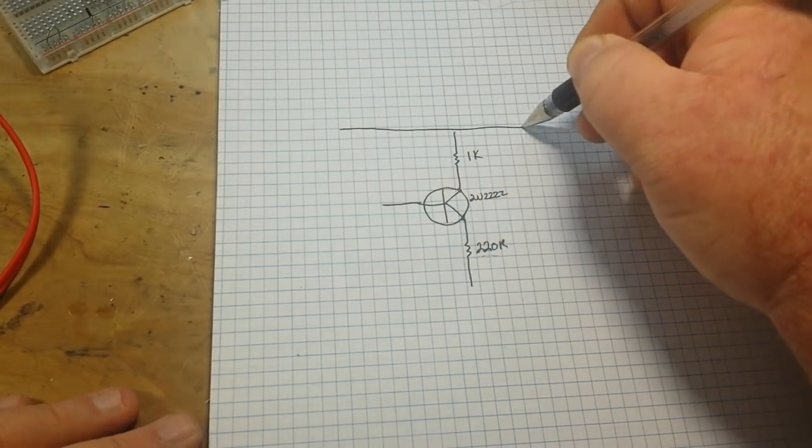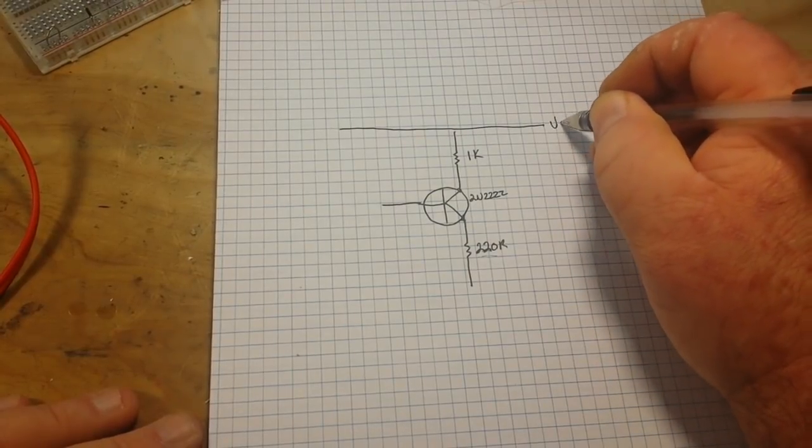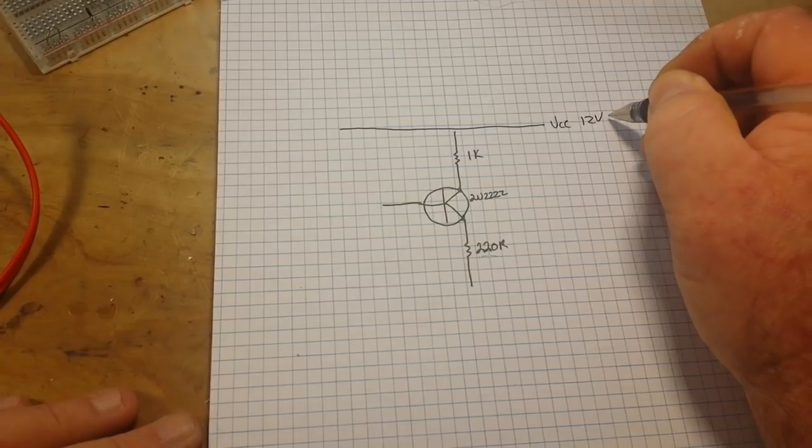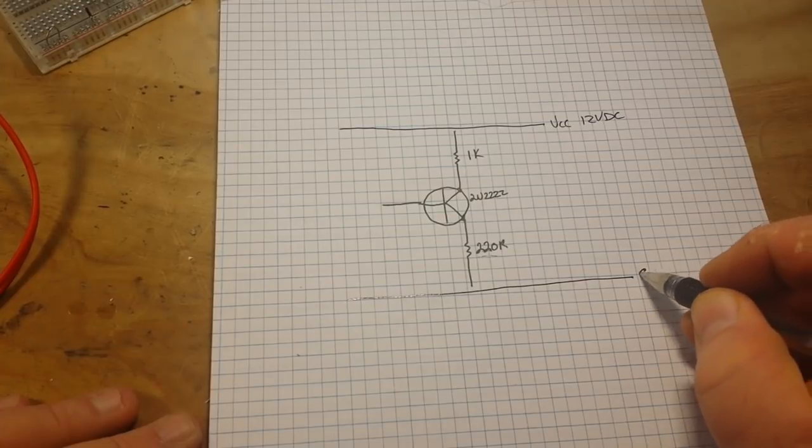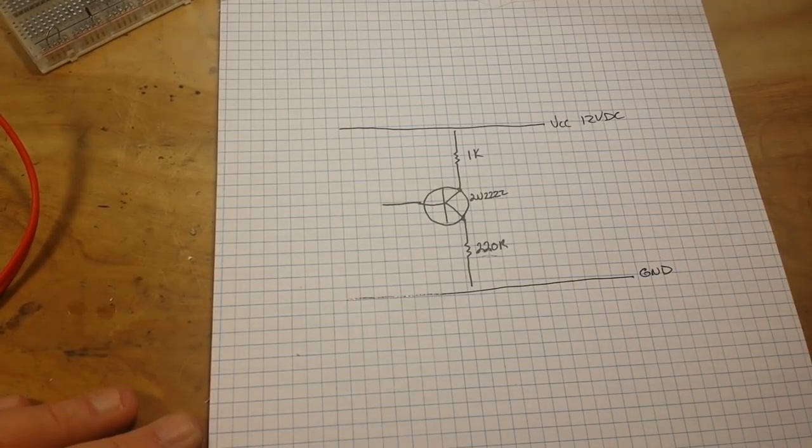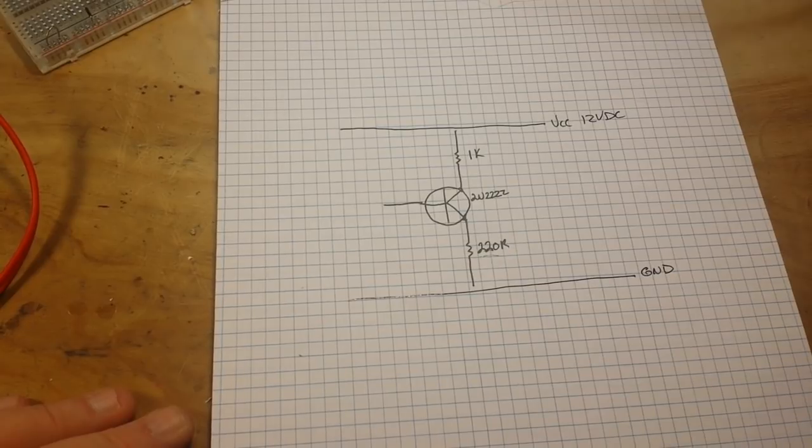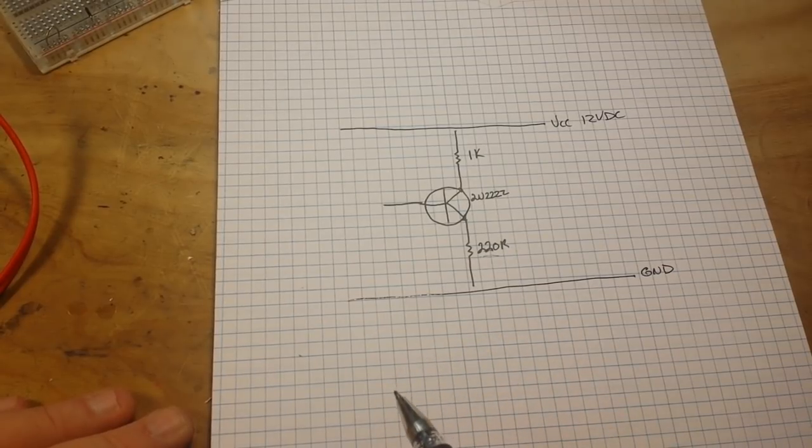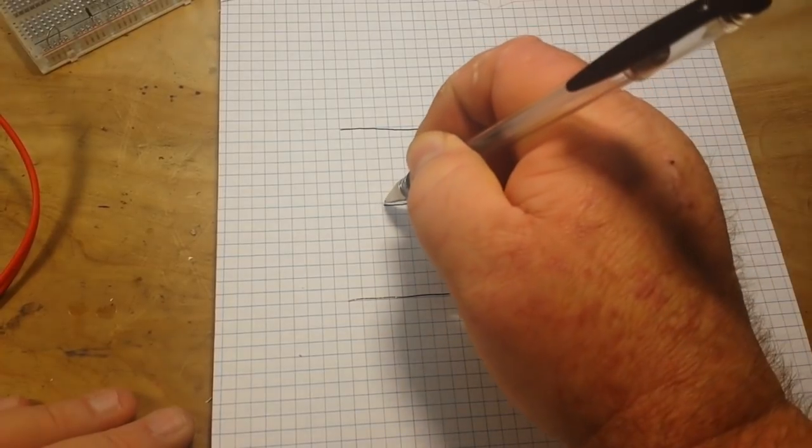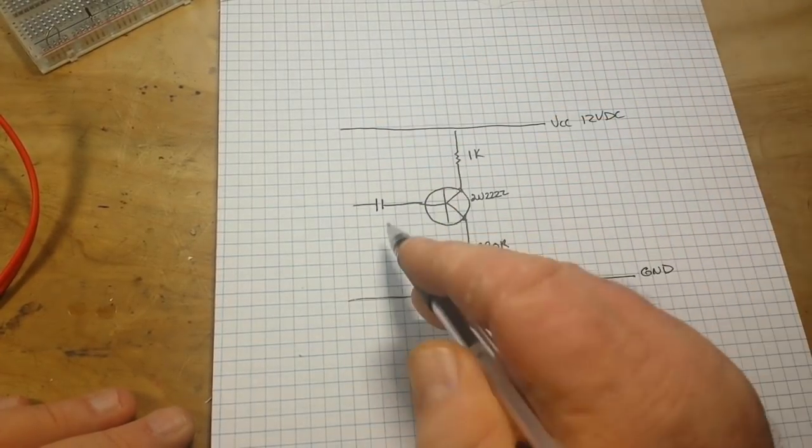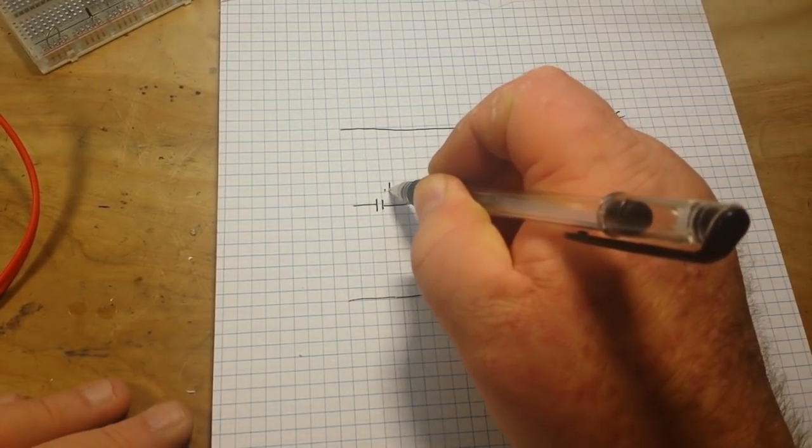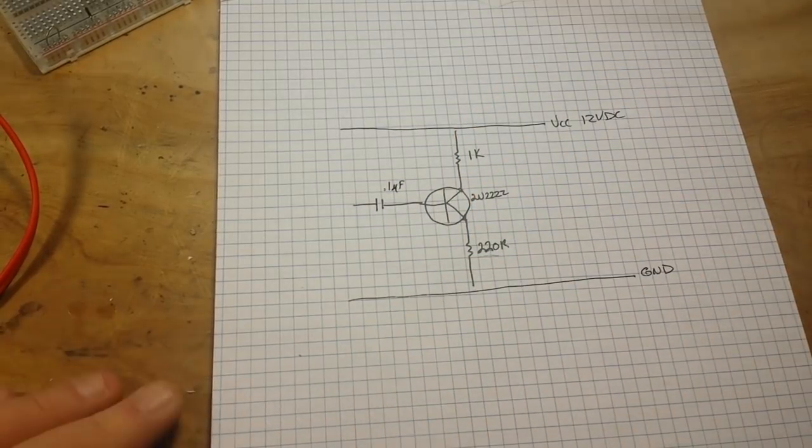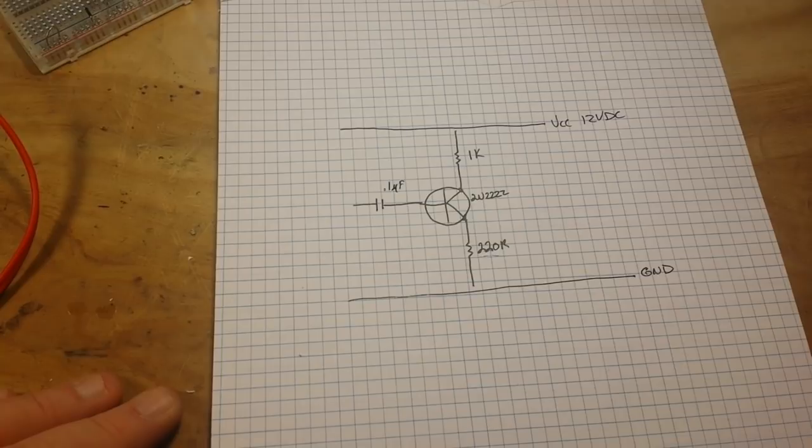So let's have our VCC up here, and for our purposes today it is going to be 12 volt DC, and ground of course is down here. Now the first thing that we want to do is we want to eliminate any DC coming into the circuit. Easy enough to do, we just put a capacitor on the input. I'm going to use 0.1 microfarad, works just fine.